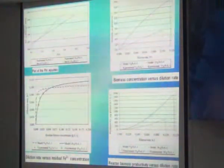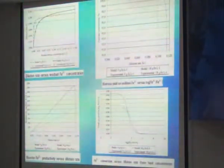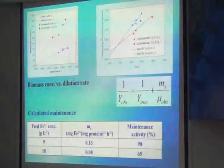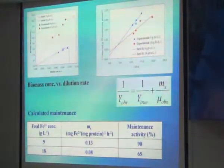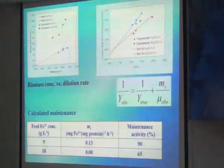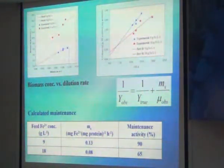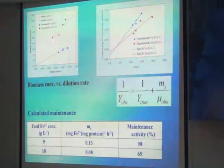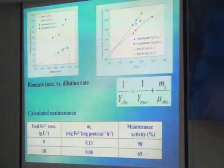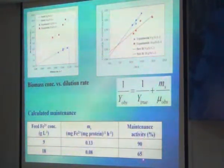Every substrate has a toxic effect. So these are some orders, but we'll come to chloride straight away. As per the calculations, if you see the biomass — just focus on this — at 9 and 18 grams of chloride, biomass increases. But if you see this maintenance energy from 9 to 18, it's decreasing.